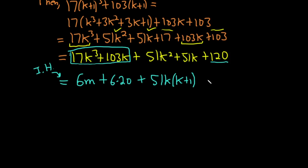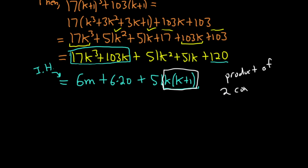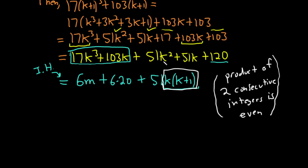This is important because k times (k+1) is even — the product of two consecutive integers is always even. That's a fact we're going to use. It makes this proof a little harder than other induction proofs, since it relies on something you might not know. It's easy to prove — I'll hopefully make a video on it.